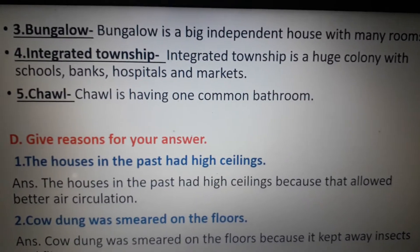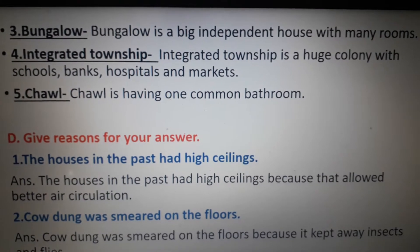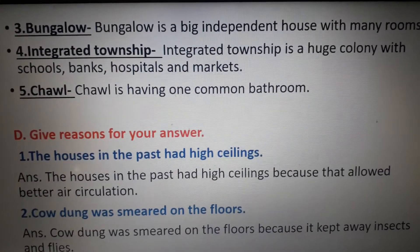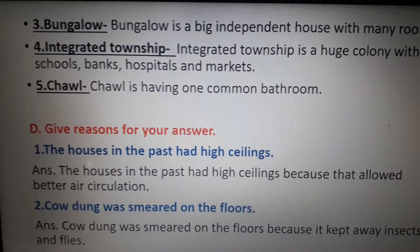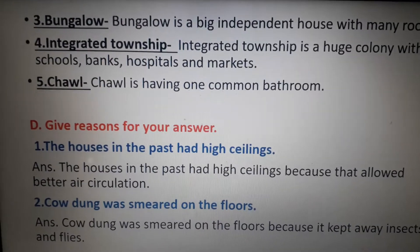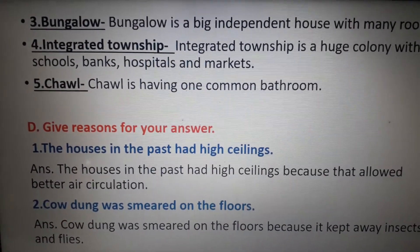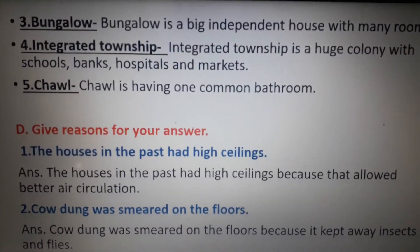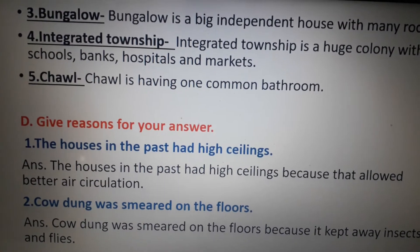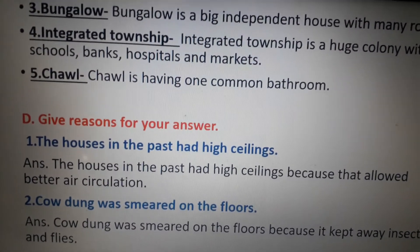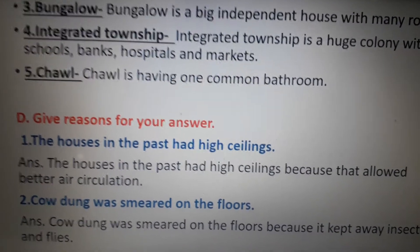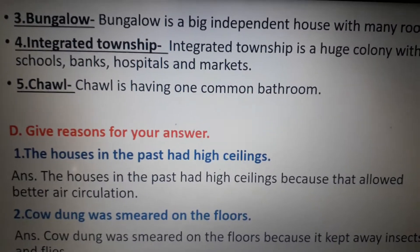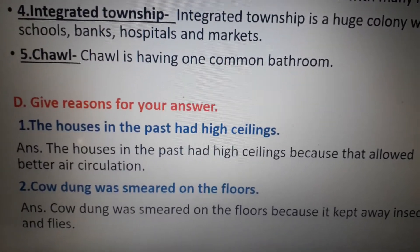Bungalow — a bungalow is a big independent house with many rooms. Number four, integrated township — an integrated township is a huge colony with schools, banks, hospitals and markets. Next is chawl — chawl has one common bathroom. I have mentioned one feature of each of these living arrangements; you can write any other feature, but it should be only one distinctive feature.